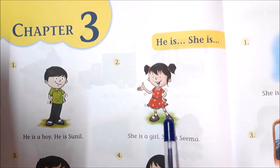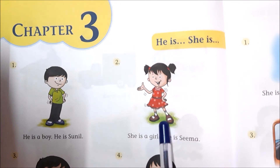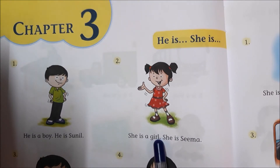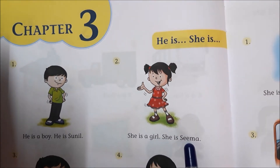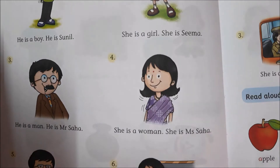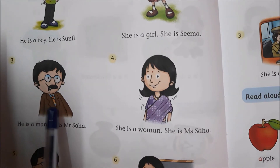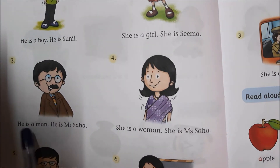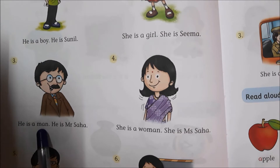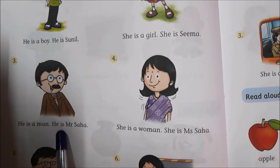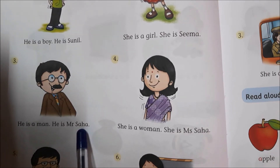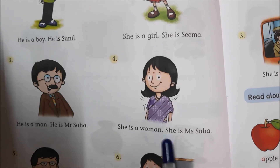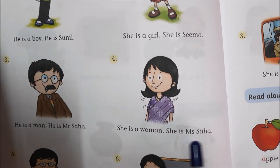Now we move on to a girl. She is a girl. She is Seema. And here we have a picture of a man. He is a man. He is Mr. Saha. She is a woman. She is Miss Saha.